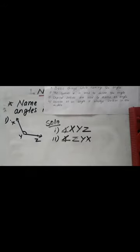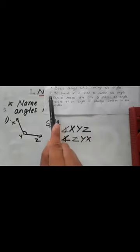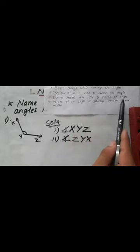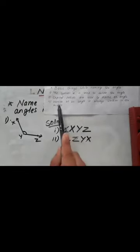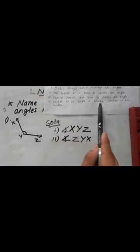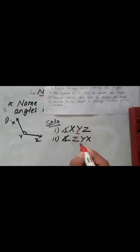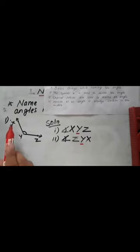Here you can see we have fulfilled all the conditions. The first condition was the symbol of angle — we have written it. Capital letters are used to name an angle — we have used capital letters. The vertex of an angle is always written in the middle — here Y is the vertex, and you can see Y is in the middle in both names.